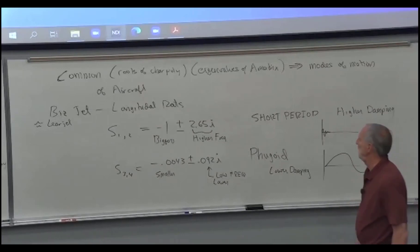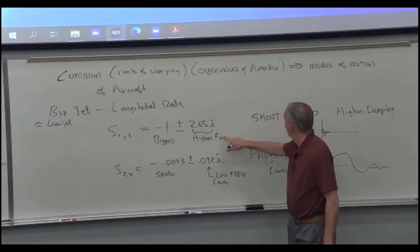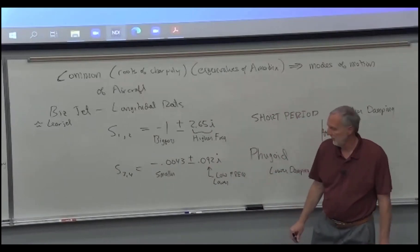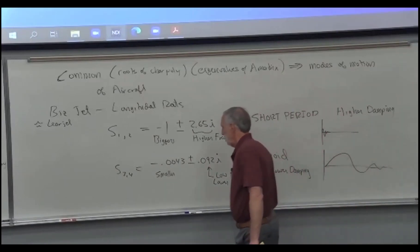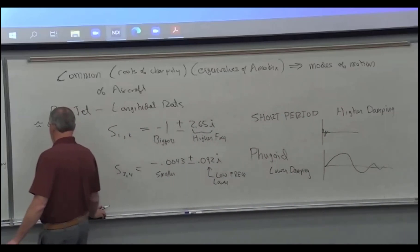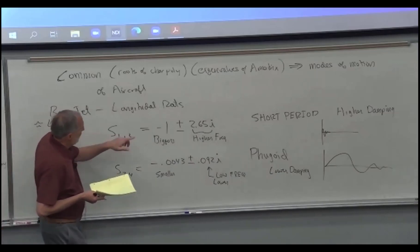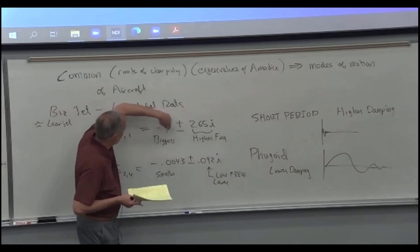If I gave you a set of roots and said these are the longitudinal roots of an airplane, you would look at them and pick the one with the biggest frequency and call that the short period. Makes sense. It's the short period. And then you'd say the other one is the Fugoid. And then we would talk about, well, how do we like these roots?